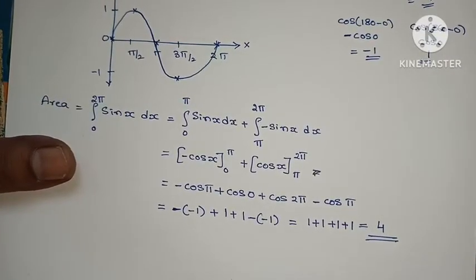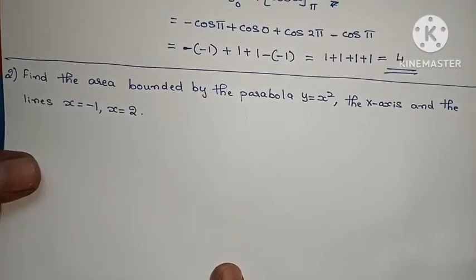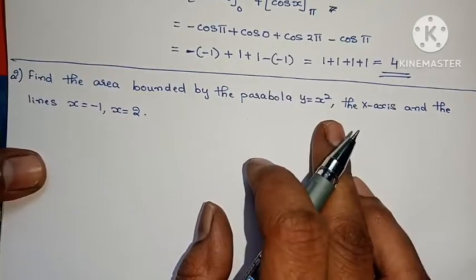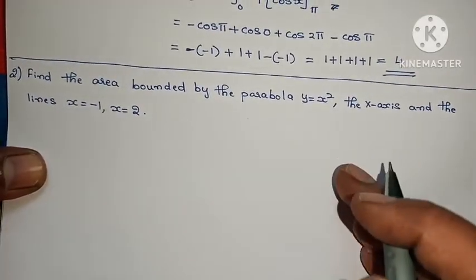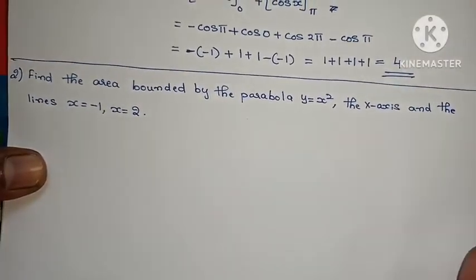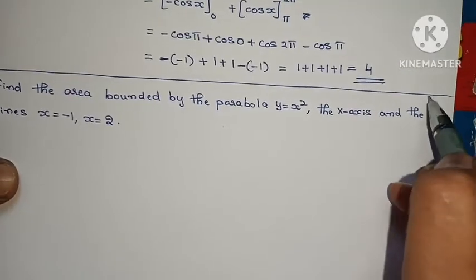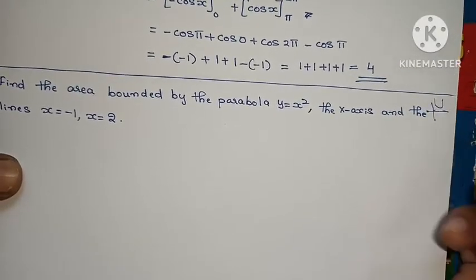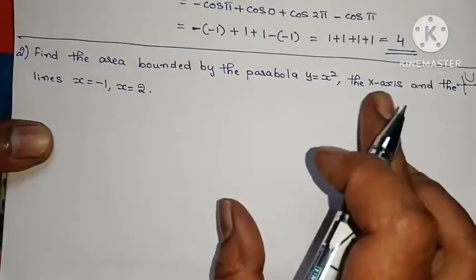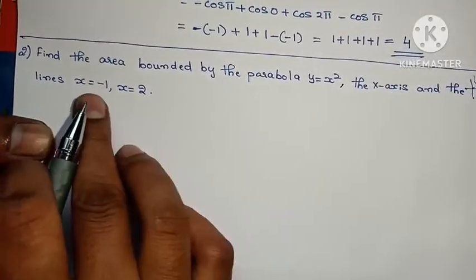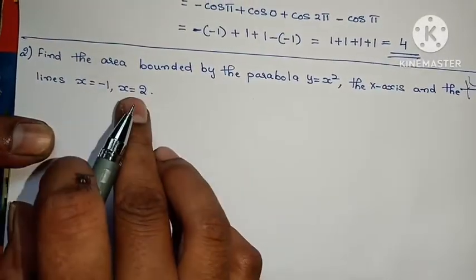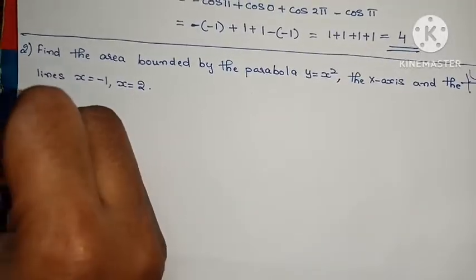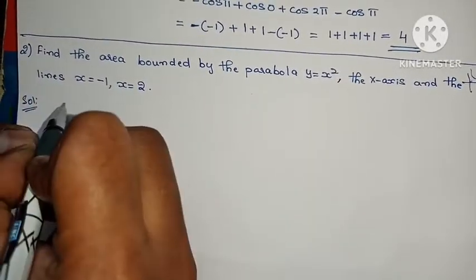My next problem: Find the area bounded by the parabola y = x², the x-axis, and the lines x = −1 and x = 2.